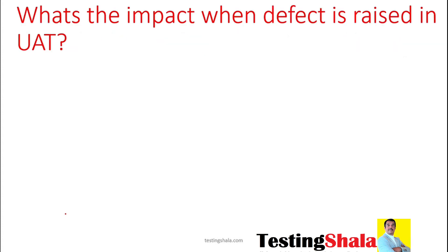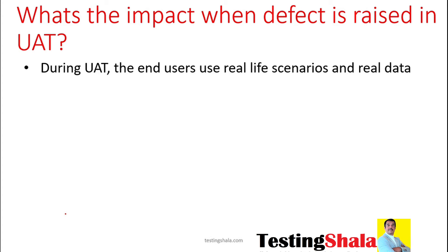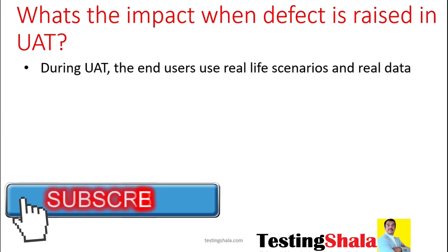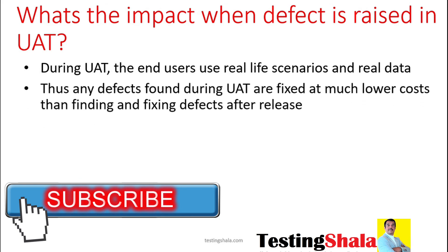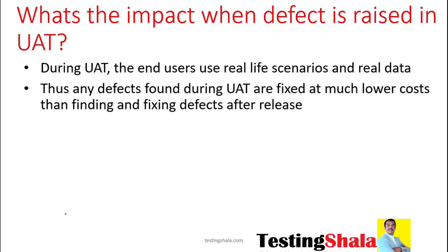What is the big impact when the UAT team logs a defect? In UAT, we focus more on real-life scenarios and real data whenever we are testing the product. This means we are able to catch issues at the earliest stage, so that before putting the product into production we can fix all those issues and reduce the overall cost of fixes.